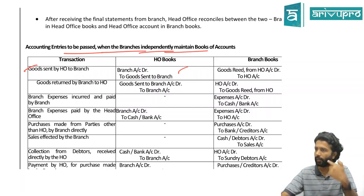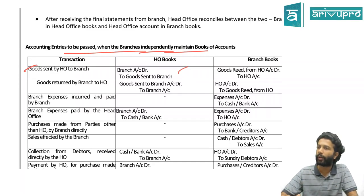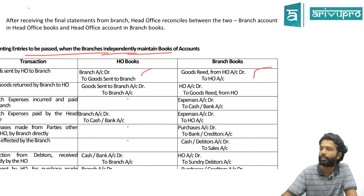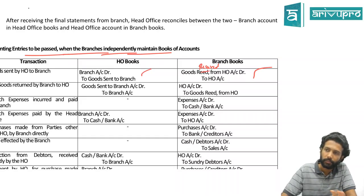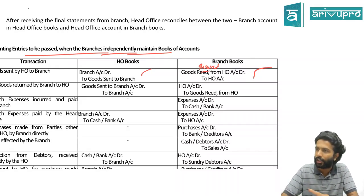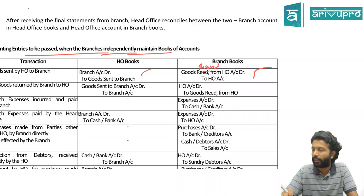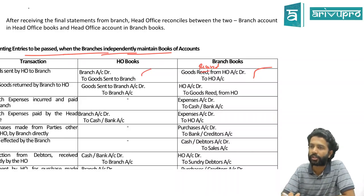From the branch perspective, it is a purchase. But since the goods are received from HO and not an outsider, instead of 'purchase' we call it 'goods received from head office.' The journal entry is: Goods Received from HO Account debit to HO Account. This is why we need to reconcile HO and branch books - branch will show HO account, HO will show branch account, and both should have the same balance. If not matching, we need to do a reconciliation.